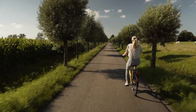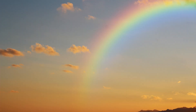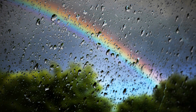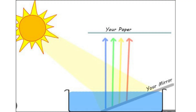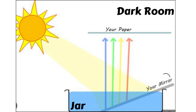Rainbow is a phenomenon — a natural spectrum appearing in the sky after a rain shower. To demonstrate this at home, take water in a jar and place a mirror inside it. Make sure you are sitting in a dark room and focus white light on the mirror. The light will get reflected. Now hold a plain white paper in between and you will be able to see a rainbow.